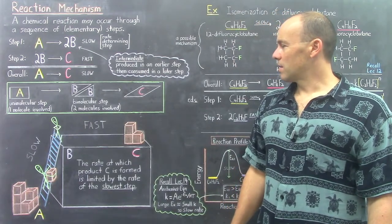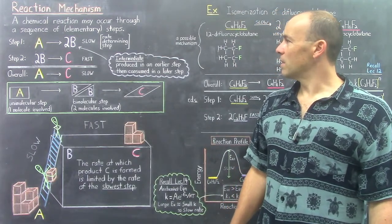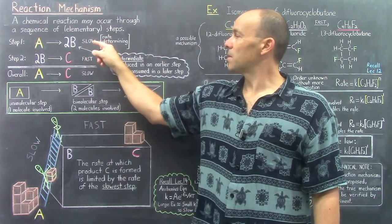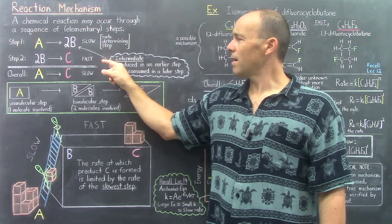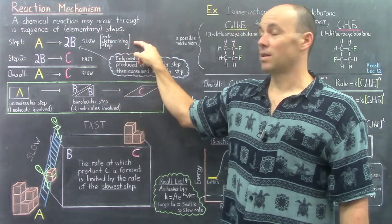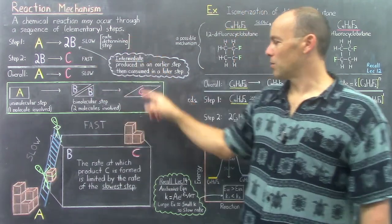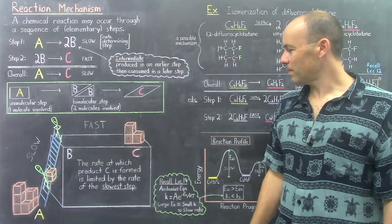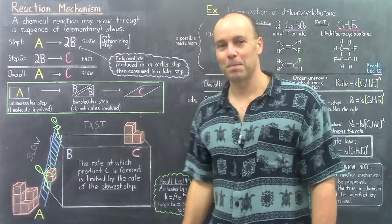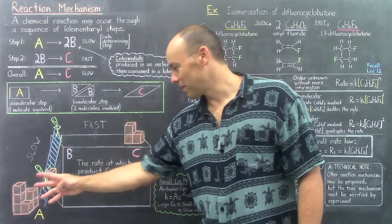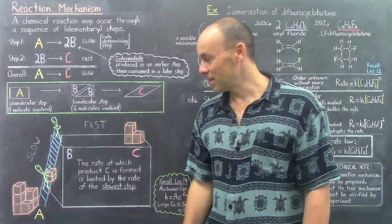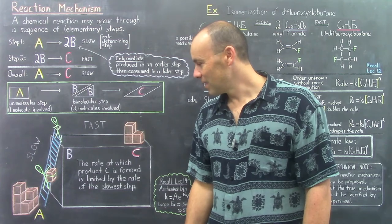Even more information regarding this mechanism involves the speed of each of the elementary reactions. The first step is slower than the second step, and that ends up slowing the overall reaction. We say that it's the rate-determining step. You can visualize the rate-determining step in a diagram. I've drawn a bunch of boxes here — and I always enjoy drawing boxes, because I find it challenging to get all the vertical and horizontal lines just right. I still have fun doing it though.